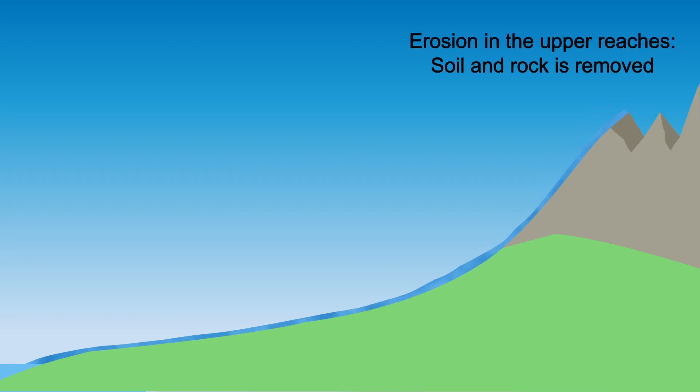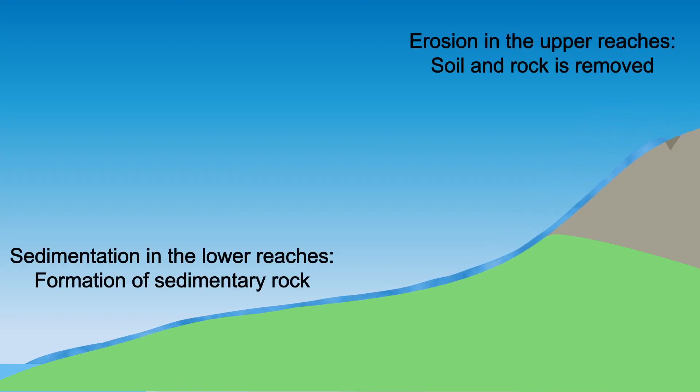So erosion tears down the landscape in the upper regions of the river, while sedimentation builds the land in the lower regions of the river.